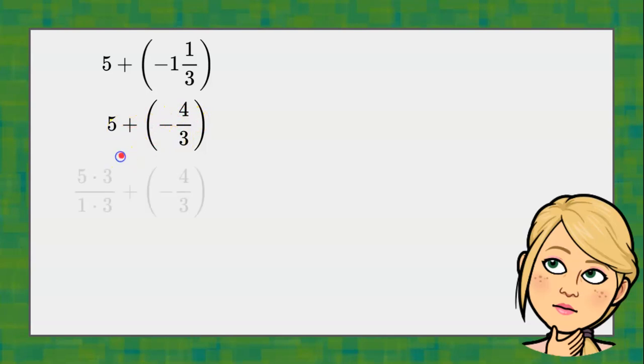Now my common denominator is going to be 3, so I'm going to take 5, which is 5 over 1, and multiply both the numerator and denominator by 3, giving me 15 over 3.